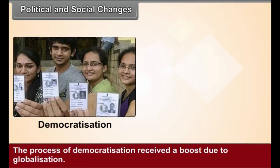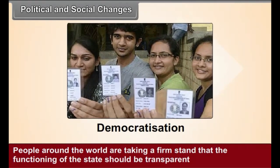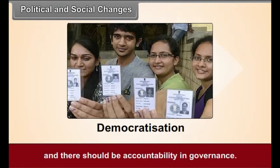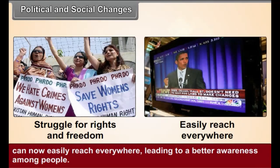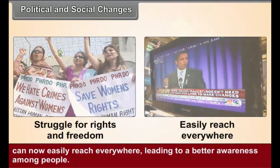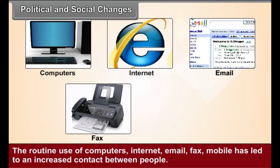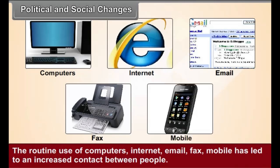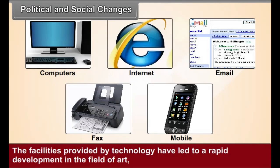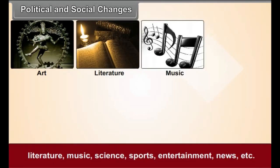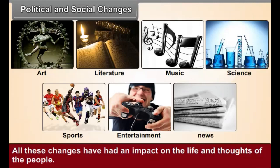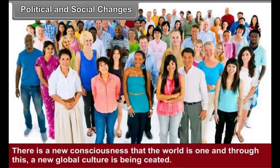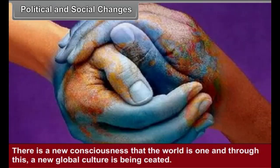Political and Social Changes. The process of democratization received a boost due to globalization. People around the world are taking a firm stand that the functioning of the state should be transparent and there should be accountability in governance. Information about the struggle for rights and freedom in the world can now easily reach everywhere, leading to a better awareness among people. The routine use of computers, internet, email, fax and mobile has led to an increased contact between people. The facilities provided by technology have led to rapid development in the field of art, literature, music, science, sports, entertainment, news, etc. All these changes have had an impact on the life and thoughts of the people. There is a new consciousness that the world is one and through this a new global culture is being created.